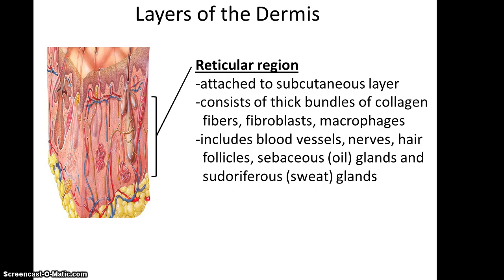Deep to that region is the reticular region. It is attached to the subcutaneous layer below it. It consists of thick bundles of collagen fibers, fibroblasts, and macrophages. It also has blood vessels, nerves, hair follicles, and many glands, such as the sebaceous gland or oil gland, and the sudoriferous glands or sweat glands. Note there doesn't seem to be a lot of reticular fibers in the reticular region.